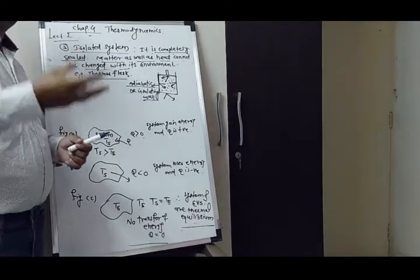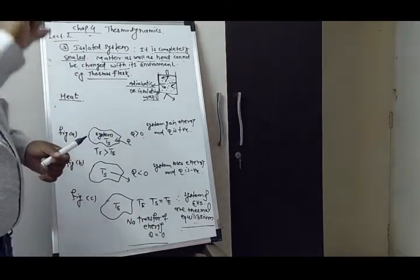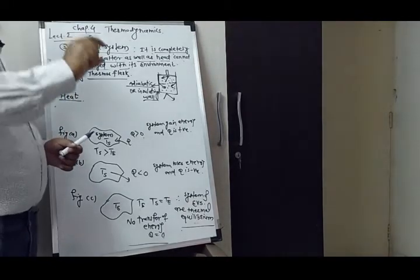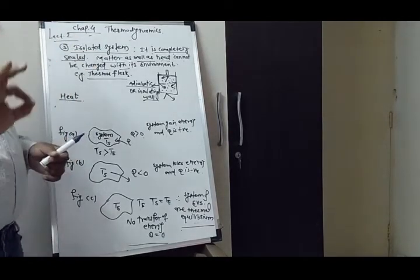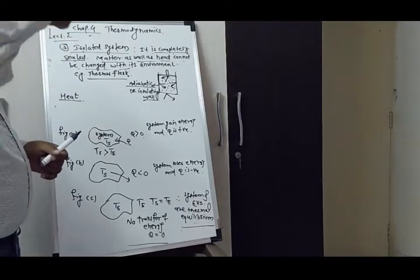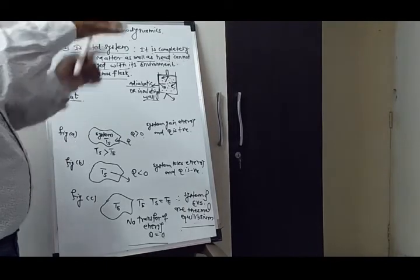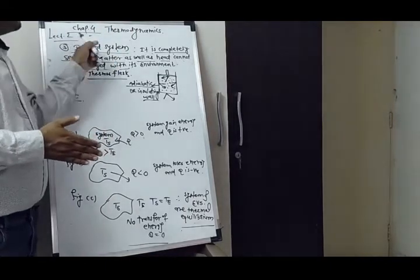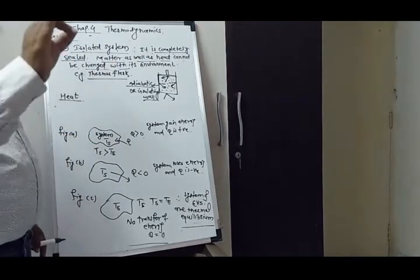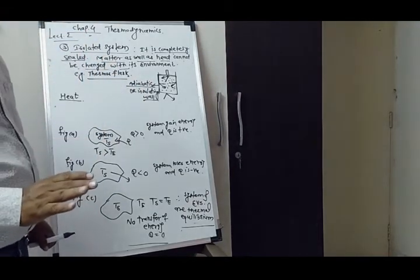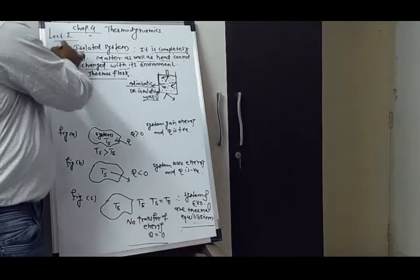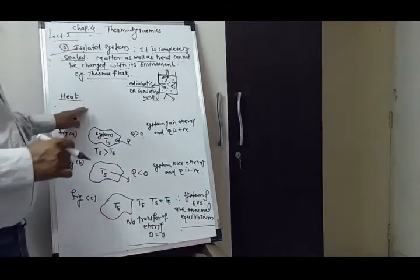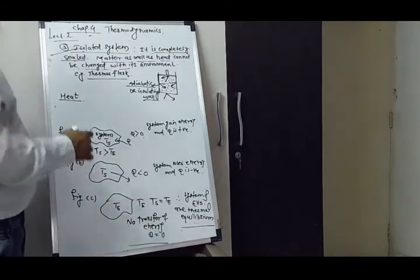In an isolated system, no exchange of heat and matter occurs; everything remains inside the vessel. An example is a thermos flask. When you put hot coffee, water, milk, or tea in a thermos flask, the temperature remains constant because it is completely sealed with an adiabatic wall, so it works as an isolated system.